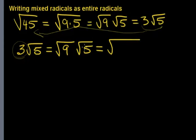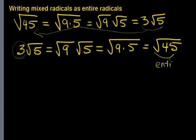So we can multiply these two factors together and that ends up giving us back our square root of 45. So here we have the entire radical and this was our mixed radical.